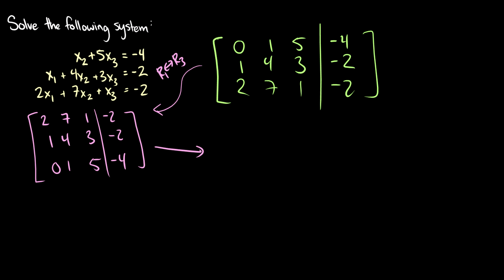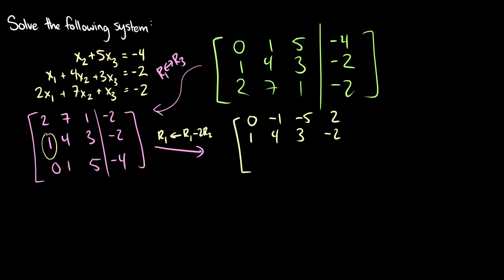Now we want to eliminate x1s so only one equation has x1. We'll take r1 and subtract 2 times row 2 from it: 2 minus 2 is 0, 7 minus 2×4 is 7 minus 8 which is negative 1, 1 minus 2×3 is 1 minus 6 which is negative 5, negative 2 minus 2×(negative 2) is negative 2 plus 4 which is 2. The other rows stay the same: 1, 4, 3, negative 2 and 0, 1, 5, negative 4.